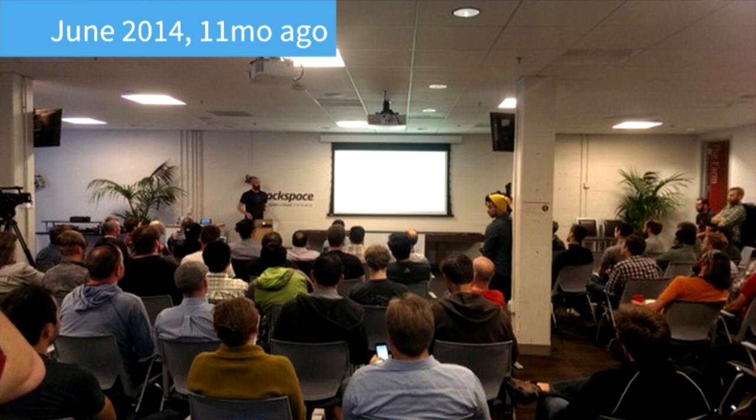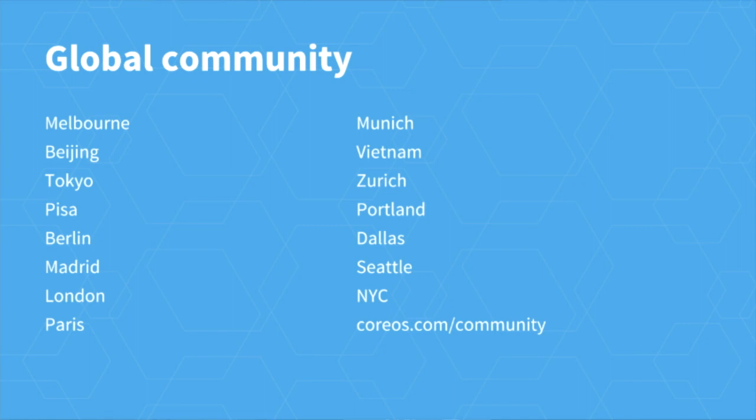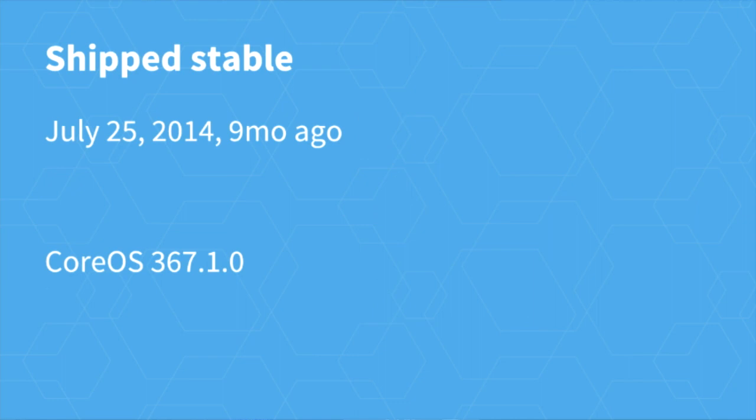Just under a year ago we held our very first meetup at the Rackspace office just down the street. One little unknown fact: Red Beard — one of our engineers — the length of his beard indicates how long he's been at CoreOS. You can see he's relatively new at that point. Since then our community has grown enormously. These are a set of meetups that have happened in the past year — it's really exploded. You can go to the community page to find out more.